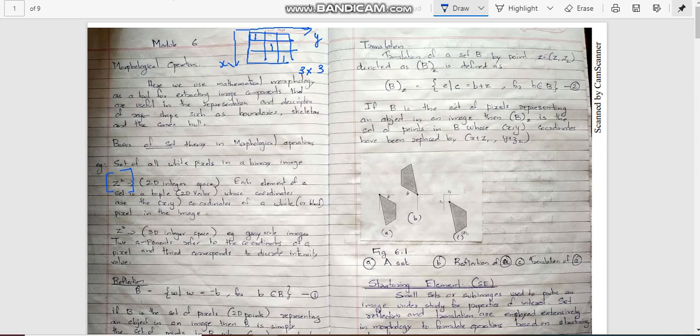These are white pixels. It is a binary image, so other pixel values are zeros. In two-dimensional integer space, each element of the set is represented using a vector. Whatever be the coordinate of 1, we represent it. It can be like 0, 0. So this coordinate represents the 1 value.